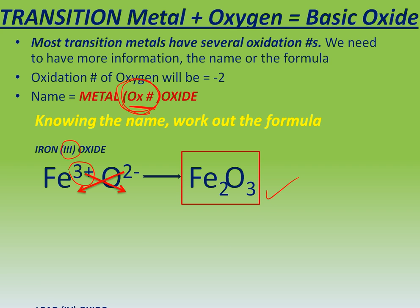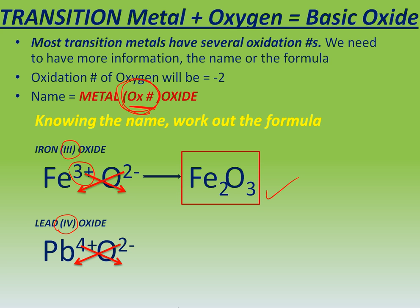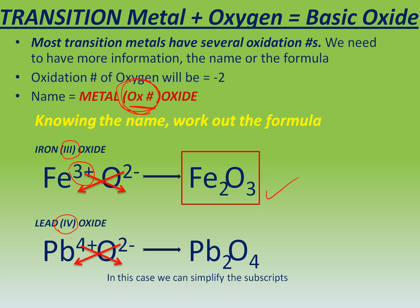If the element is lead, for example — lead works with 2 and 4. In this case it is 4, so we put lead, which is Pb, and oxygen negative 2. Same as with calcium, we can simplify the numbers because both are divisible. So in this case we will have the formula PbO₂.